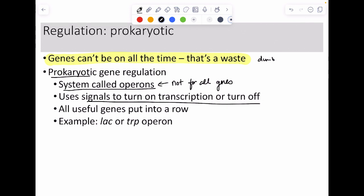It's only used if the genes are all in a row. An operon is a series of genes needed for a particular phenotype and we can turn them all on or off at the same time.